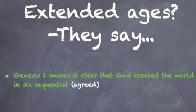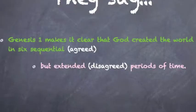They also say Genesis chapter one makes it clear that God created the world in six consecutive days. We agree on that one. But one guy in the middle has a different perspective. Six sequential, but they say extended periods of time. So I disagree with that one. That's pink. I don't agree with that as an Adventist.